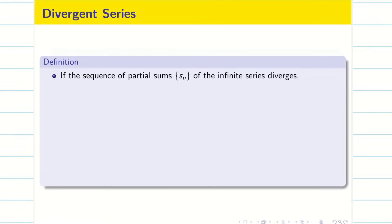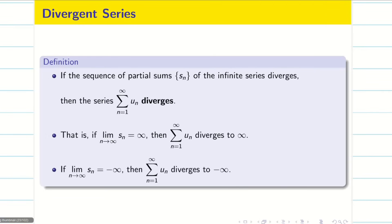Next, you take the sequence of partial sums Sn. If it diverges, then the summation n equal to 1 to infinity Un is also diverging. If limit n tends to infinity Sn is plus infinity, then I will say summation n equal to 1 to infinity Un diverges to infinity. If this Sn is going to be minus infinity, then I will say summation n equal to 1 to infinity Un diverges to minus infinity.